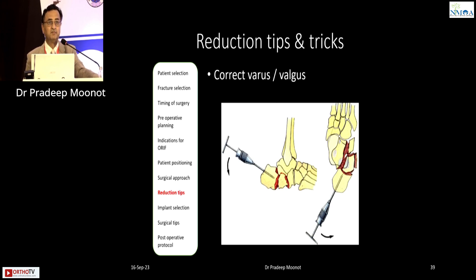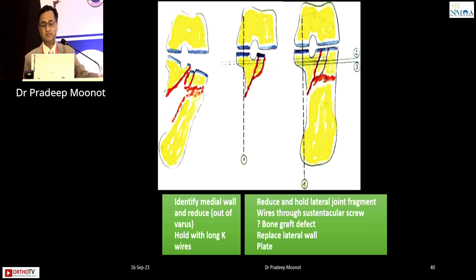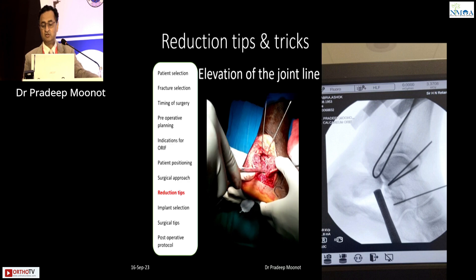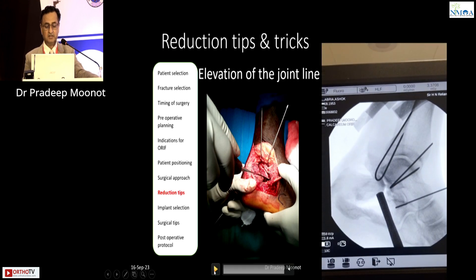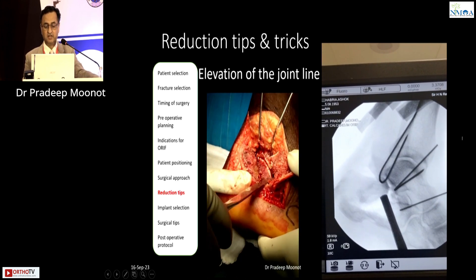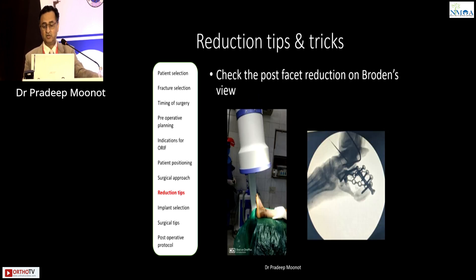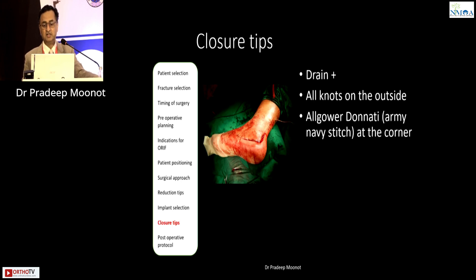Use a Schanz pin or Steinmann pin to reduce the fracture and restore height and correct deformity. Restore from medial to lateral: fix the central fragment first, then apply the lateral fragment, pass wires across, and insert screws. Elevate the articular fragment and hold it with a wire passing through the tuberosity into the talus as a holding wire. Check Brodén's view, confirm no deformity remains, and then select the appropriate plate for fixation. For closure, place a drain with all knots on the outside — this is the Allgöwer-Donati or army-navy stitch.